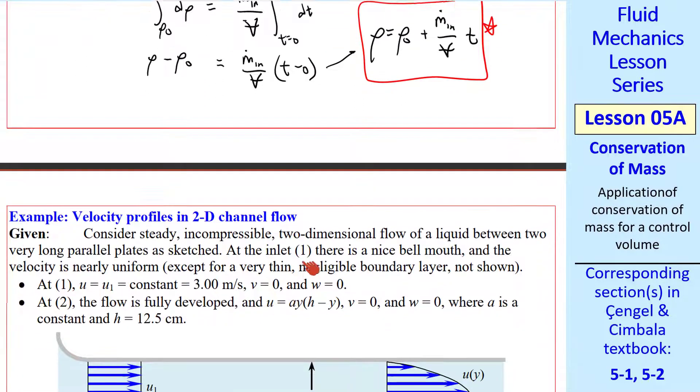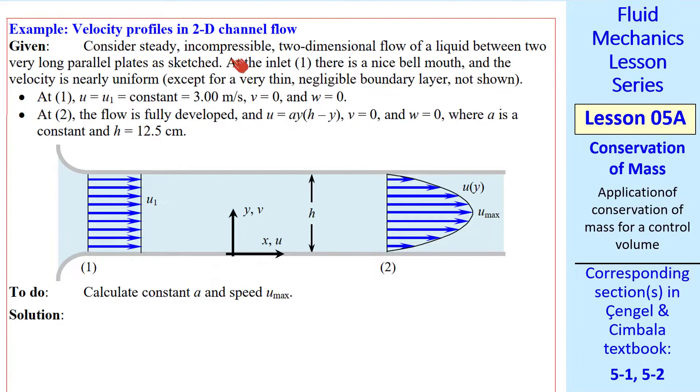Now let's do a steady flow problem. We have steady, incompressible two-dimensional flow of some liquid between two very long parallel plates. The plates extend a long distance into the page, making this two-dimensional. We have a nice rounded inlet, and the velocity profile at the inlet 1 is nearly uniform. We'll call it U1, and we give its value. So U1 is 3 meters per second. V and W are both 0.